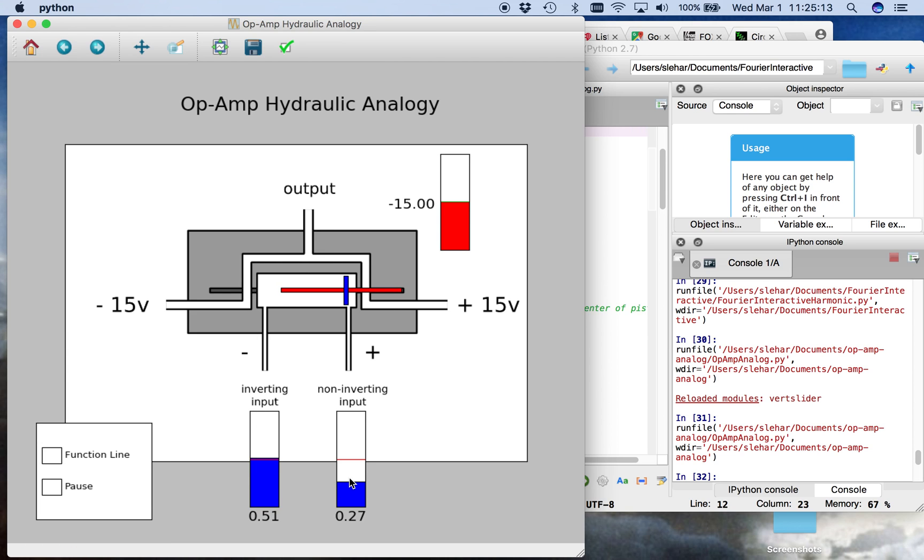And if you run this at just the right point in the middle, there's a kind of linear range. We can show it here with this function line that in this range, there's a kind of linear response before it goes to the bang-bang control.